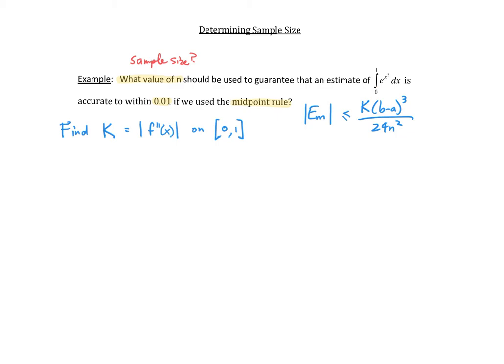Let's write down what our function is. Our function f of x is going to be the integrand, which is e to the x squared. We need to take a couple of derivatives. The first derivative f prime of x — we have to use the chain rule. The derivative of e to the something is e to the something, keeping the inside. We multiply by the derivative of x squared, which is 2x.